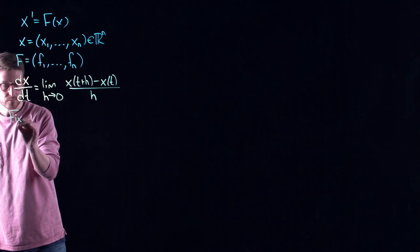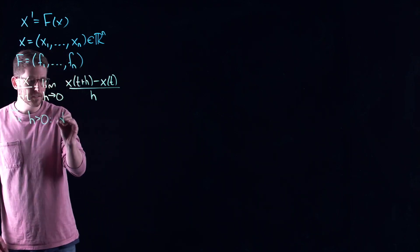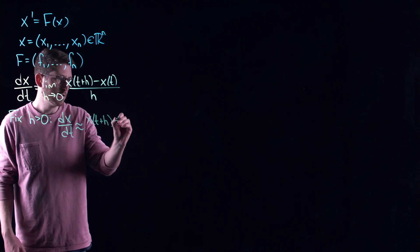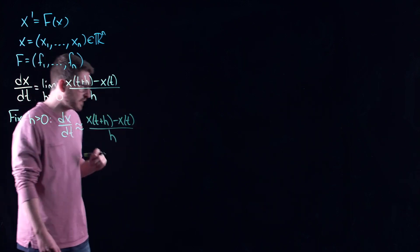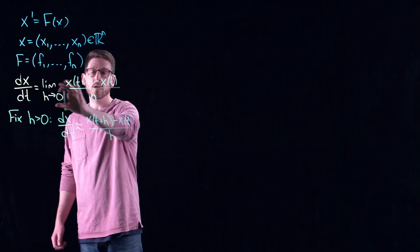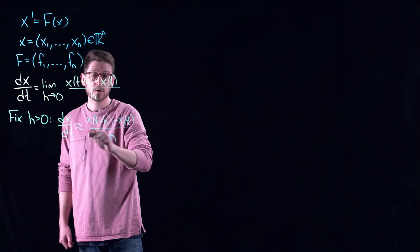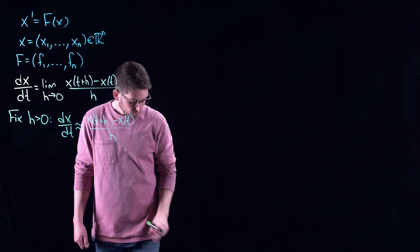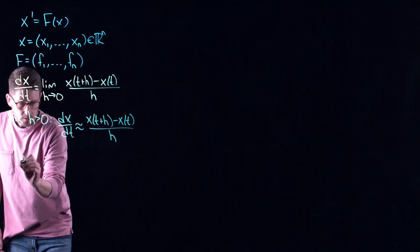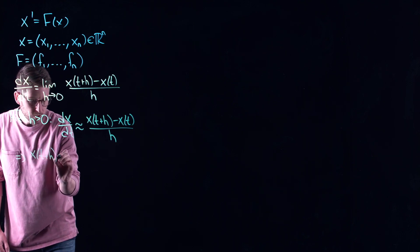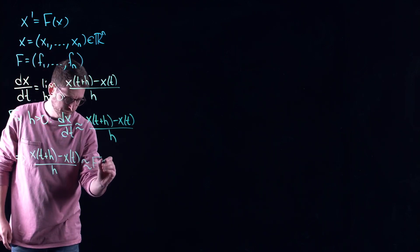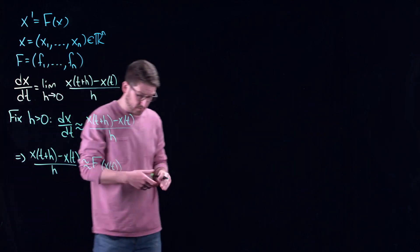We are actually going to use this in order to turn this system into an approximate difference equation. The way that we're going to do that is we're going to pick a very small h. If this limit exists, the smaller h is, the closer I'm getting to equality in this equation. So let's pick a small h greater than 0. That tells me that my derivative now is approximately this quotient here.